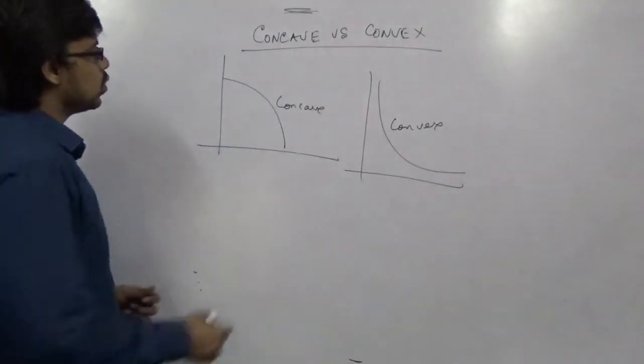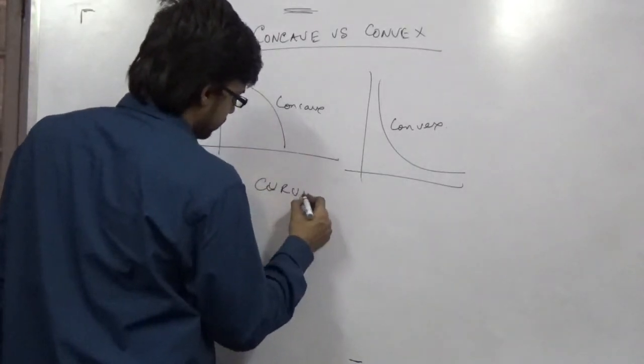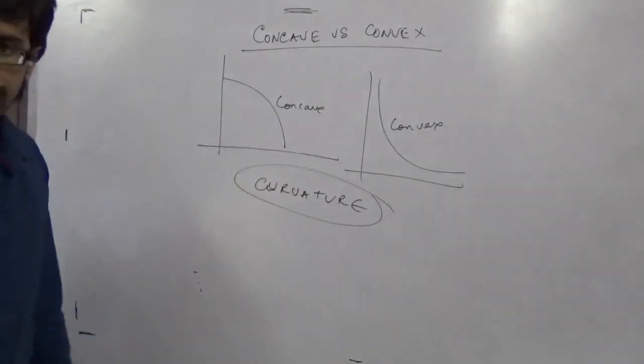For example, these two is actually called the curvature. So curvature means it depends on the second order derivative.